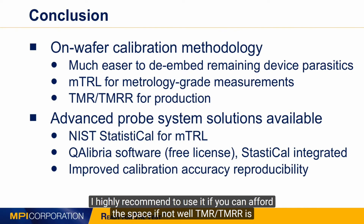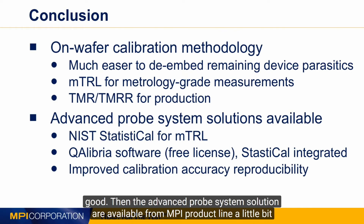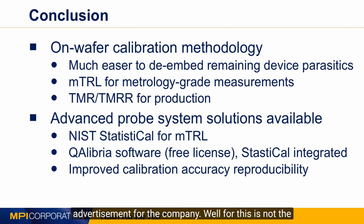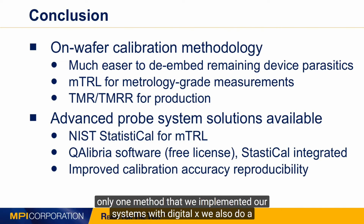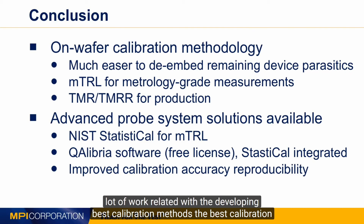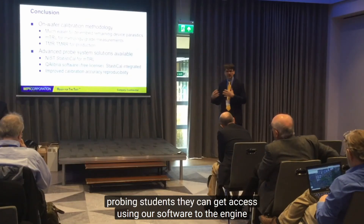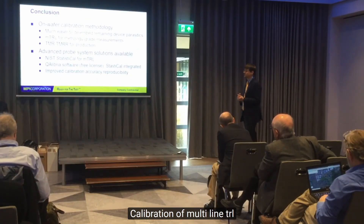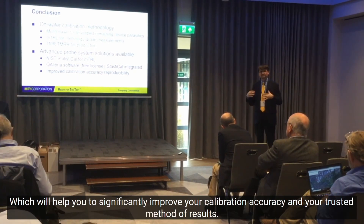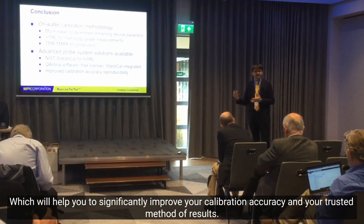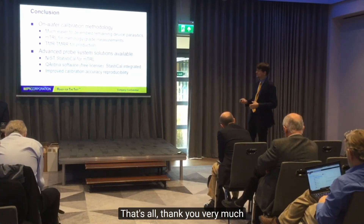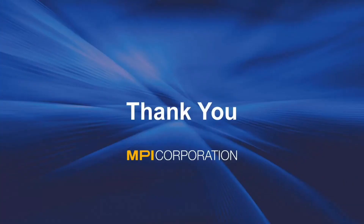If not, TMR works just as well. Advanced top system solutions are available from MPI — a little advertising for the company. Beyond Digital X, we also do a lot of work developing best calibration methods and upgrades. Our calibration software, Calibrate, is tightly integrated with NIST's Statistic Arc engine, giving you access to the multi-line TRL calibration engine embedded in Statistic Arc, which significantly improves calibration accuracy and measurement result transfer. Thank you very much.